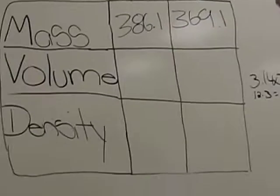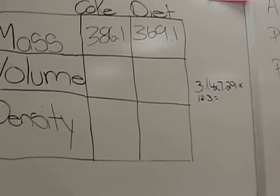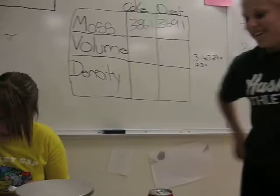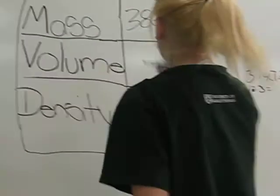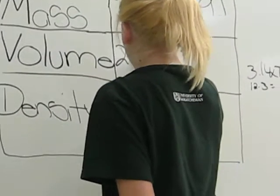For Coke and Diet Coke, for the volume for Coke, it will come to 281.55, and for the Diet it will come to 281.55.